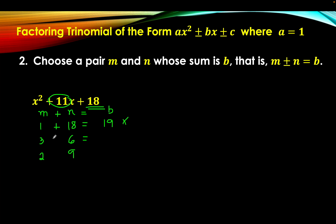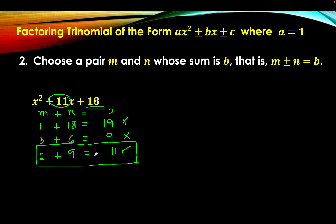The second pair: 3 and 6, when added, the sum is 9 — that's not what we're looking for. The last one: 2 plus 9 equals 11, which is correct. So the two integers that satisfy the condition are 2 and 9. Their product is 18, and their sum is equal to 11. Now the question is, how are we going to write the factor of x squared plus 11x plus 18?